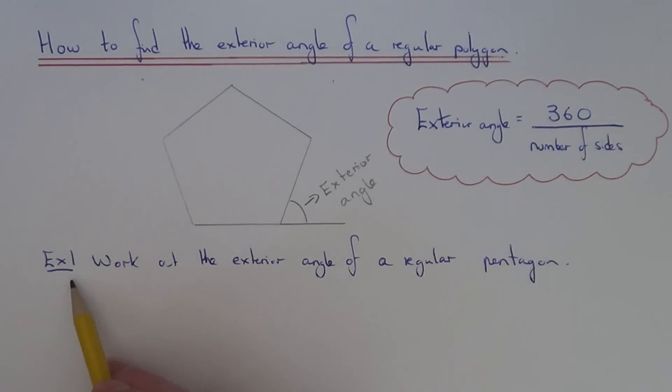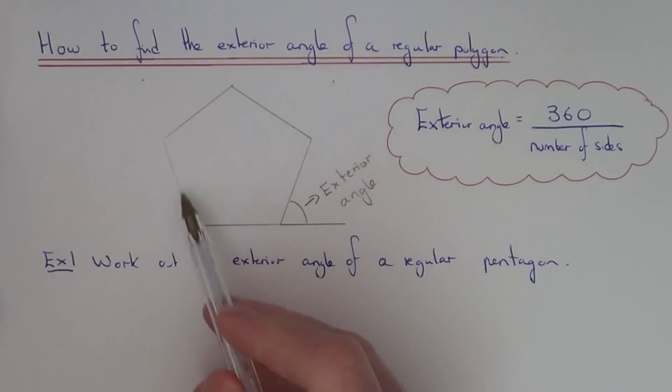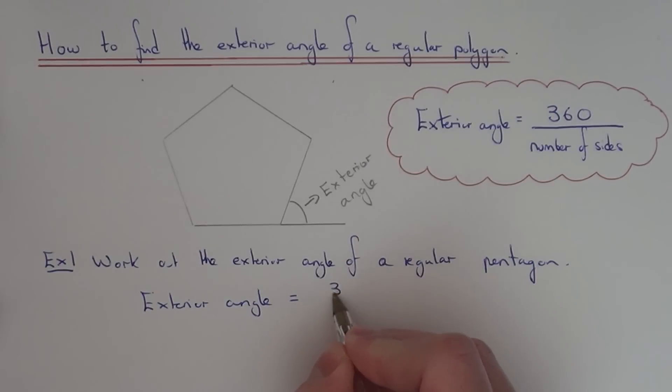So let's work out the exterior angle of this regular polygon shown above. Here we have a regular pentagon, so this has five sides. To find the exterior angle, all you need to do is 360 divided by 5.